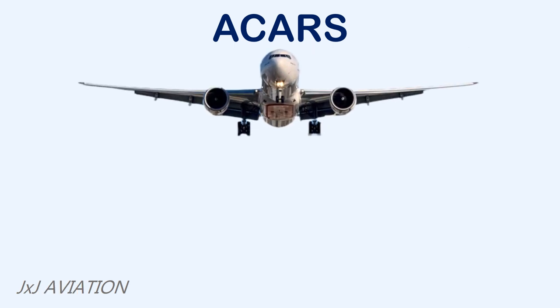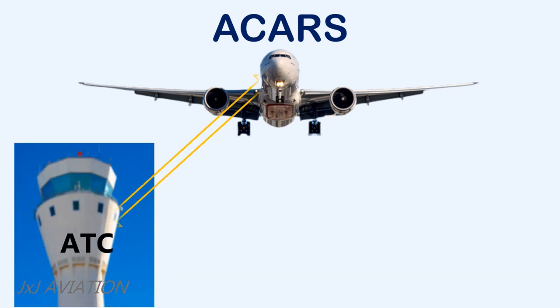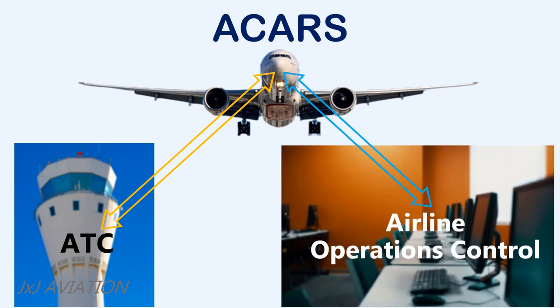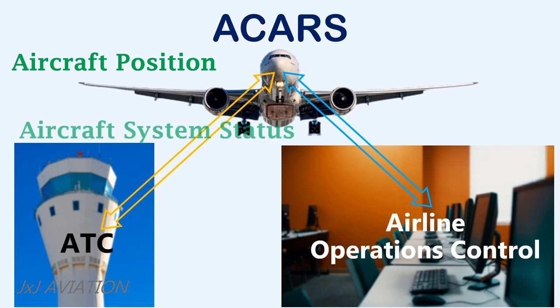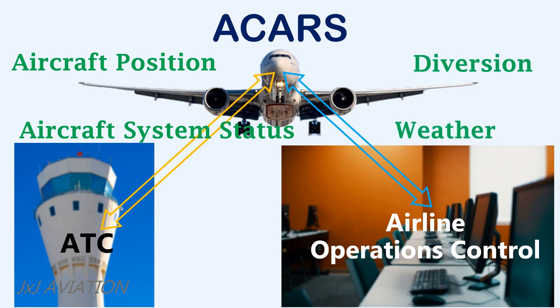The ACARS sends or receives data from the ATC for controlling a particular airspace. It could also send information to the airline operations control for efficient management of the airline fleet and personnel for smooth operation of all the aircraft. The ACARS sends data such as the aircraft position, the aircraft system status or any failures that occurred, weather related information, and diversion information if required.